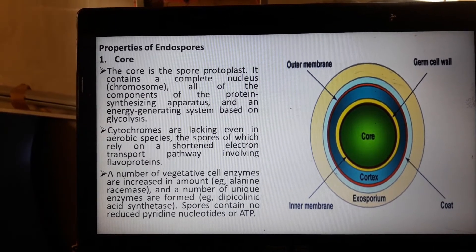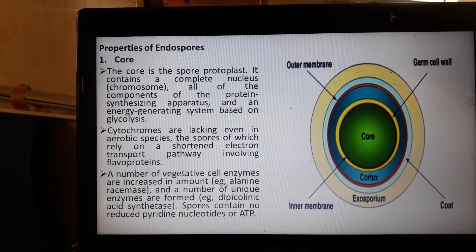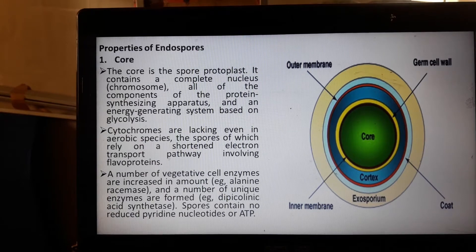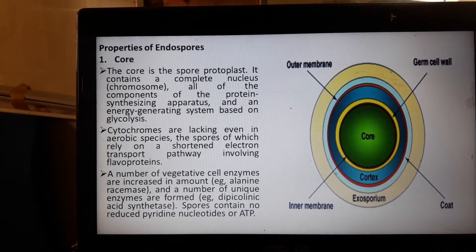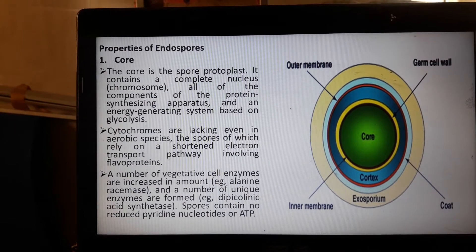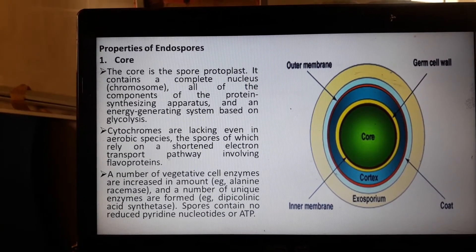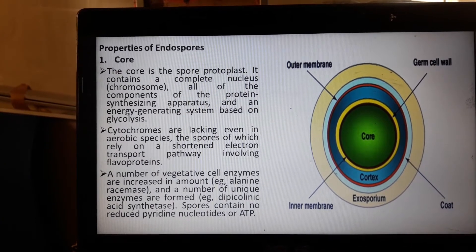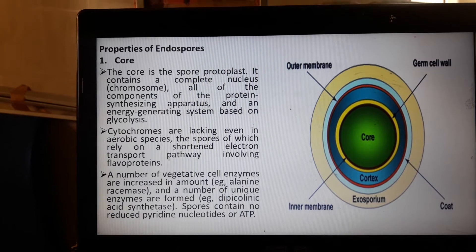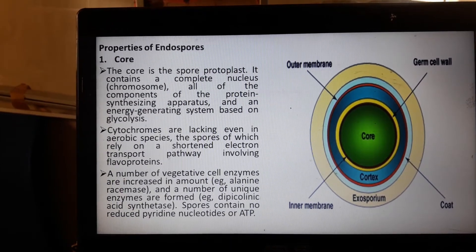They have alanine racemase enzyme involved in the vegetative stage and a number of unique enzymes are formed during sporulation, like dipicolinic acid synthetase enzyme needed for the sporulation process. Spores contain no reduced pyridine nucleotides or adenosine triphosphate.